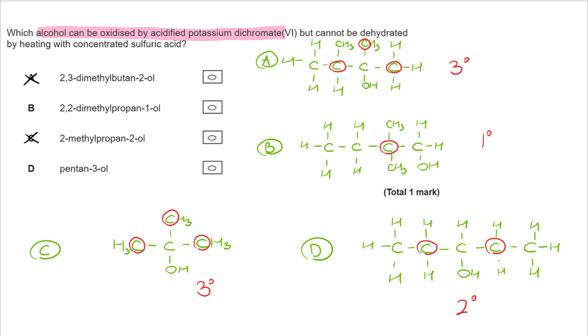What we need to think about is which cannot be dehydrated by heating with concentrated sulfuric acid. On D there is an H on the C that the OH is on, and that is therefore allowed to be removed. Whereas when you consider B, the carbon where the H needed to be is surrounded by Cs, so it simply can't happen. The correct answer is B.